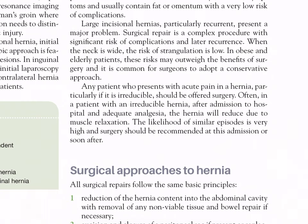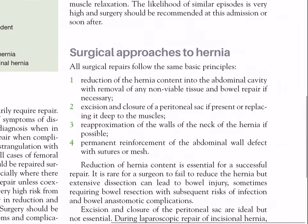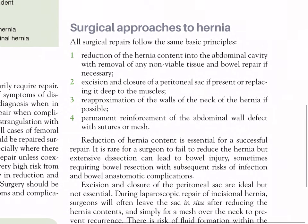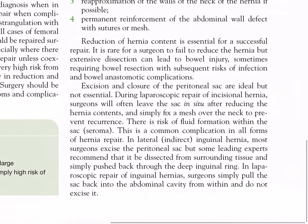All surgical repairs follow the same basic principles: reduction of the hernia content into the abdominal cavity with removal of any non-viable tissue and bowel repair if necessary; excision and closure of the peritoneal sac if present, or replacing it deep to the muscles; re-approximation of the walls of the neck of the hernia if possible; and permanent reinforcement of the abdominal wall defect with sutures or mesh. Reduction of hernia content is essential for a successful repair. It is rare for a surgeon to fail to reduce the hernia, but extensive dissection can lead to bowel injury sometimes requiring bowel resection with subsequent risks of infection and anastomotic complications.